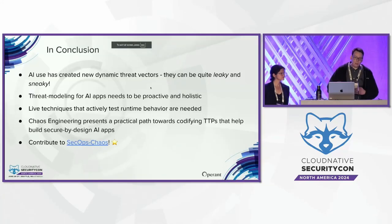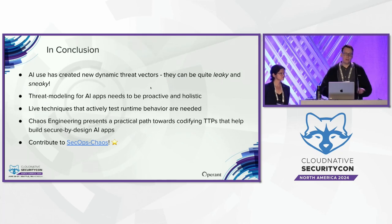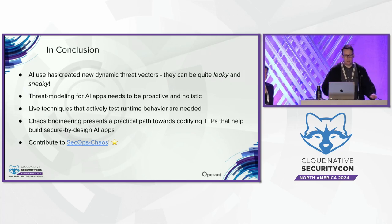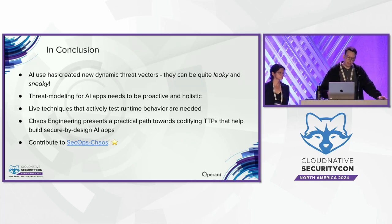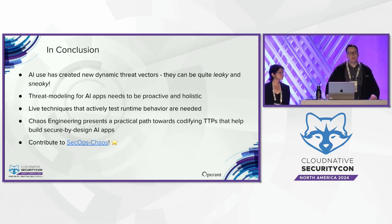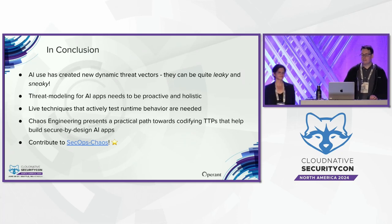In conclusion, AI use has created new dynamic threat vectors. Threat modeling for apps needs to be proactive and holistic. Techniques that actively test runtime behavior are needed. Chaos engineering and SecOps Chaos presents a practical path forward. SecOps Chaos is open source, so please contribute if you have any ideas — we welcome all contributions. With that, we can open the floor to questions.